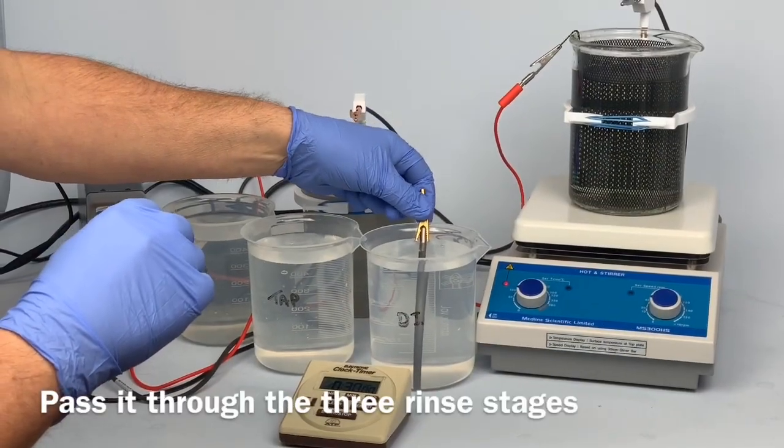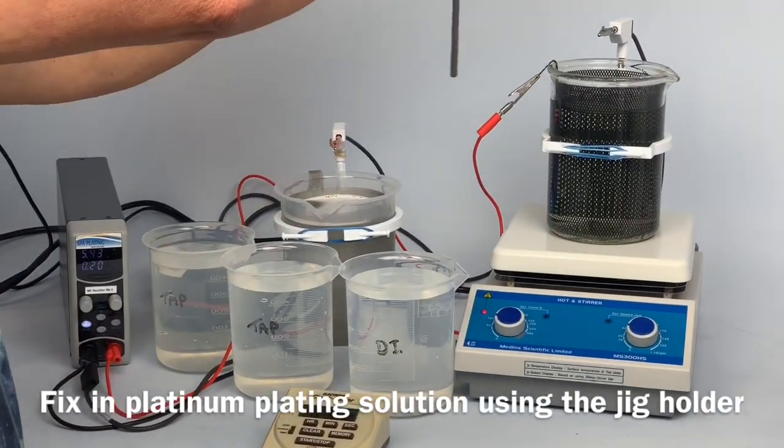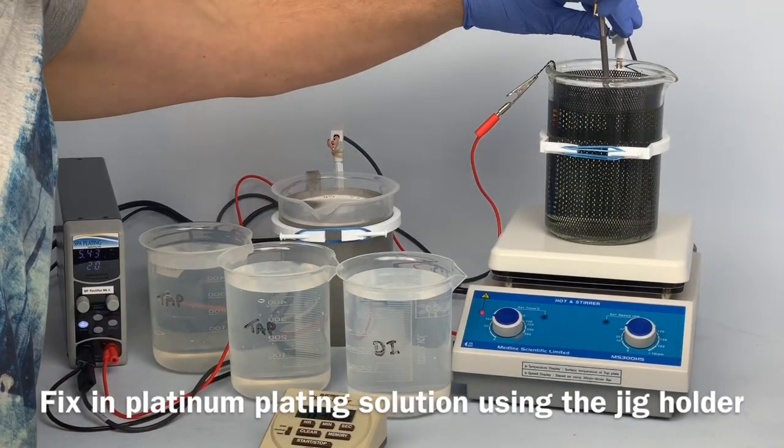Pass it through the three rinse stages and then fix it in the platinum tank plating solution using the jig holder.